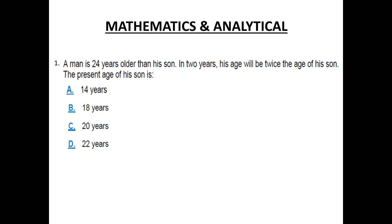The first question. A man is 24 years older than his son. In 2 years, his age will be twice the age of his son. The present age of his son is, the correct answer is, 22 years. Now how?